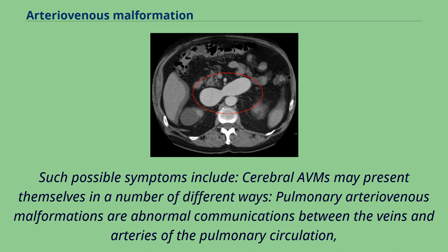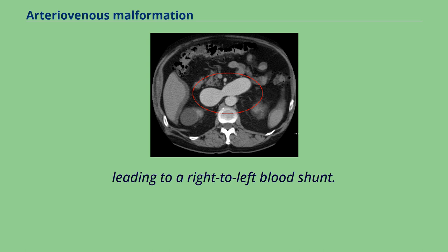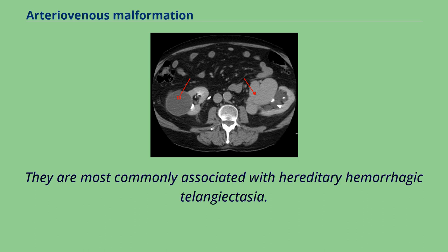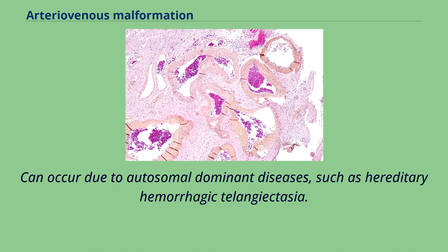Pulmonary arteriovenous malformations are abnormal communications between the veins and arteries of the pulmonary circulation, leading to a right-to-left blood shunt. They have no symptoms in up to 29% of all cases; however, they can give rise to serious complications including hemorrhage and infection. They are most commonly associated with hereditary hemorrhagic telangiectasia, and can occur due to autosomal dominant diseases such as hereditary hemorrhagic telangiectasia.